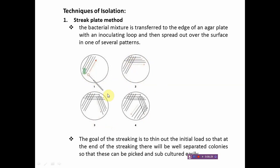After cross-over streaking into quadrant two, the loop is re-sterilized and cross-over streaking is done in the third quadrant, then again the loop is sterilized for the fourth quadrant. The goal of streaking is to thin out the initial load of bacteria so that at the end of streaking there will be well-isolated, well-separated colonies. The streak plate method is the most common and extensively used technique for isolation of bacteria — it is used for aerobic, facultative anaerobic, as well as anaerobic bacterial cells.